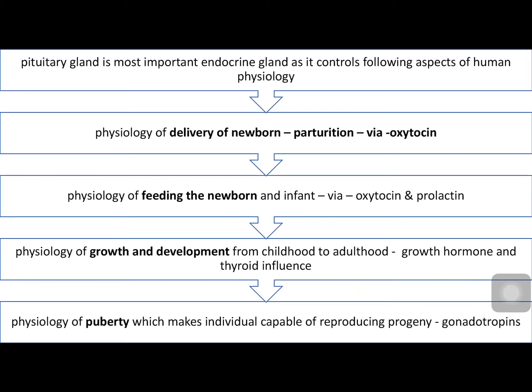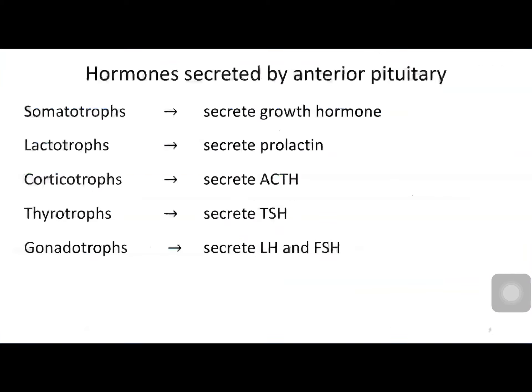The pituitary also plays an important role in puberty and makes individuals capable of reproducing progeny by production of gonadotropins. There are six different hormones secreted from the anterior pituitary. From somatotrophs, growth hormone is secreted; from lactotrophs, prolactin; from corticotrophs, ACTH; from thyrotrophs, TSH; and gonadotrophs secrete luteinizing hormone and follicle stimulating hormone.